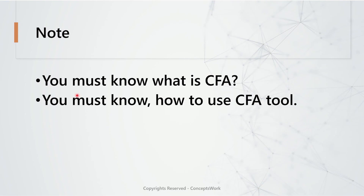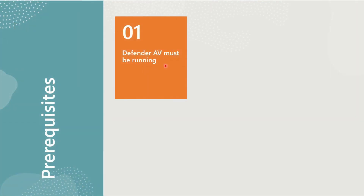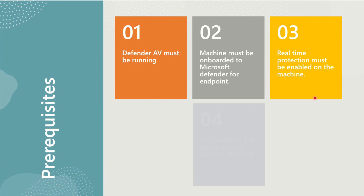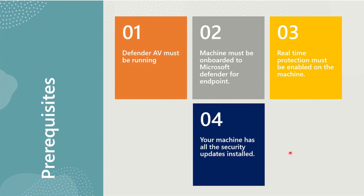Before you go ahead and follow each and every step I'll be showing in this video, you must know what controlled folder access is and how to use the controlled folder access tool — something I demonstrated in my last video. From a prerequisites standpoint, it's the same: Defender AV service must be running, your machine must be onboarded to MDE, real-time protection must be enabled, and all security updates and patches must be installed.